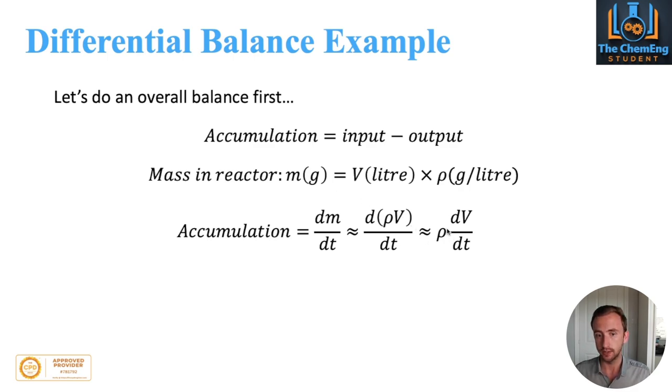We are told in the question that the density is constant, so therefore we bring this out of the equation. That becomes ρ(dV/dt) - that's our accumulation term. Our input is simply Q₀, the volumetric flow coming in. We need to multiply that by the density to give us the velocity, then minus Q multiplied by ρ. The density features in all three terms so we can cancel them out.